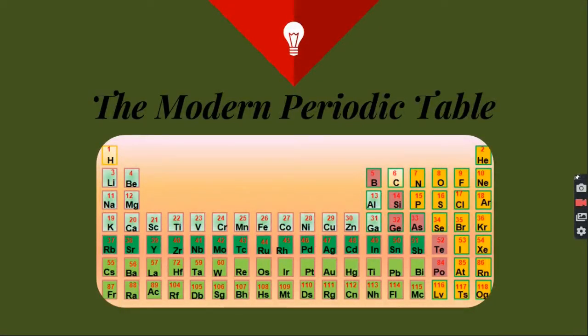Welcome back everyone. In our previous video, we studied about the efforts made by different scientists like Dobriner, Newland, and Mendeleev. They all tried to simplify the study of elements by classifying them.